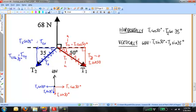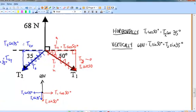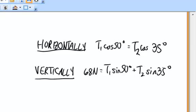All right, now I've got a system of two equations and two unknowns. I don't know what T1 is. I don't know what T2 is. I can use my tried-and-true method of substitution. Solve the horizontal equation for T1. Substitute that into the second equation. Solve for T2.